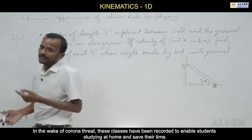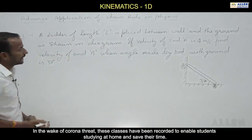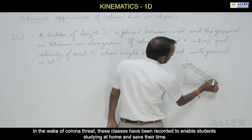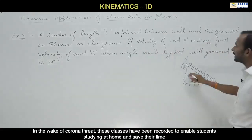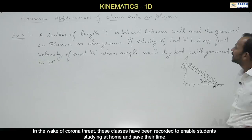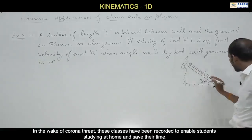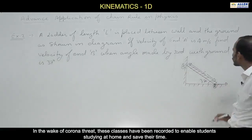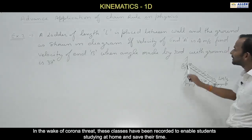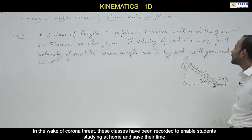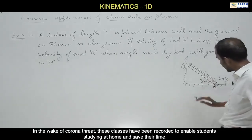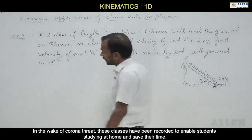Let's see another problem. A ladder of length l is placed between a wall and the ground as shown in the diagram. The velocity of end A is 4 meters per second. Find the velocity of end B when the angle made by the rod with the ground is 37 degrees. Velocity is the rate of change of position.